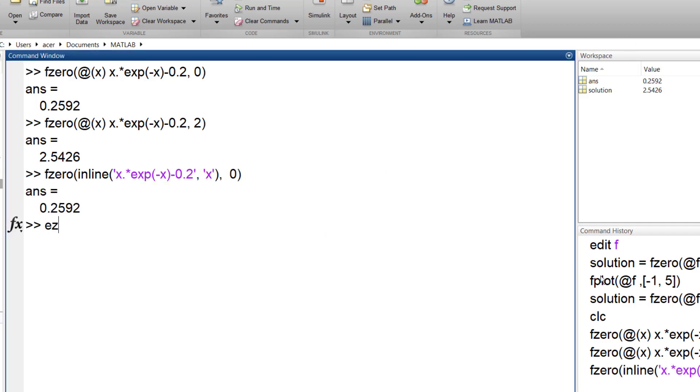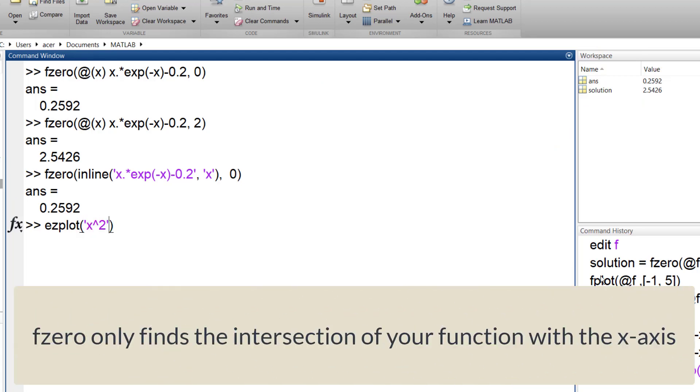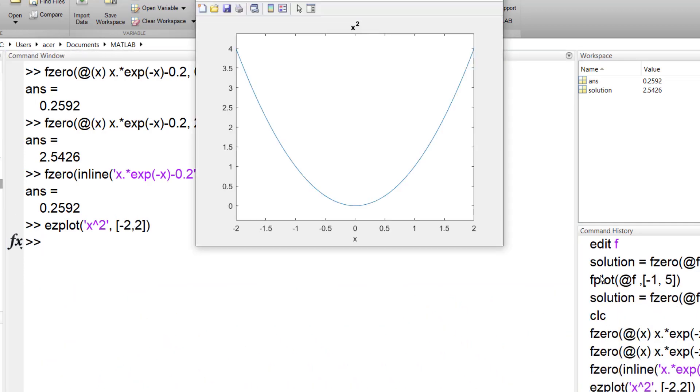Before we proceed to next part here are a few notes on how to use fzero. fzero only finds the intersection of your function with the x-axis, so if the function touches the x-axis but doesn't cross it as in this example, fzero cannot find the solution.